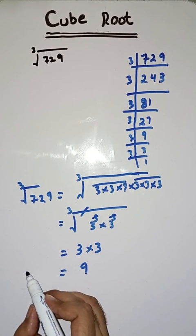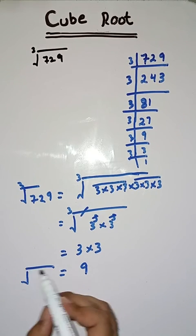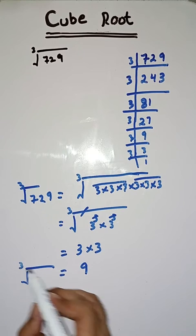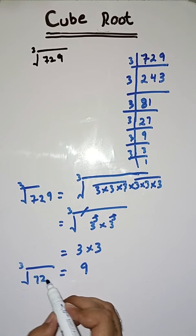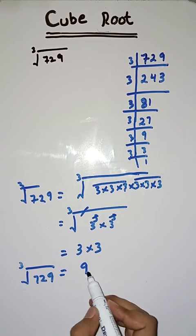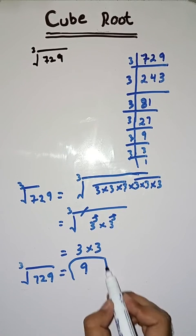So students, the cube root of 729 is equal to 9.